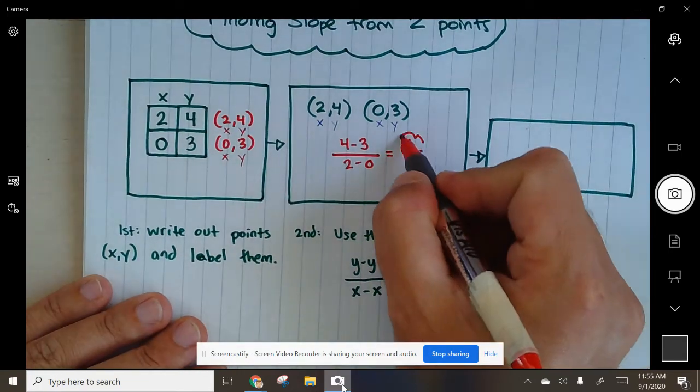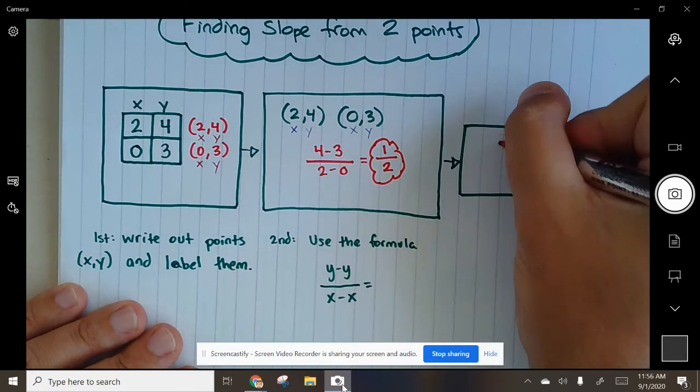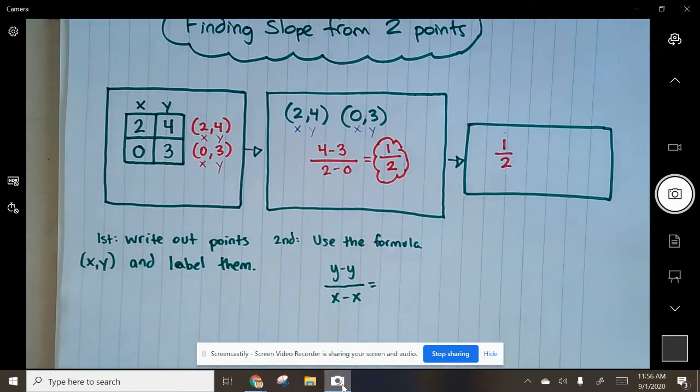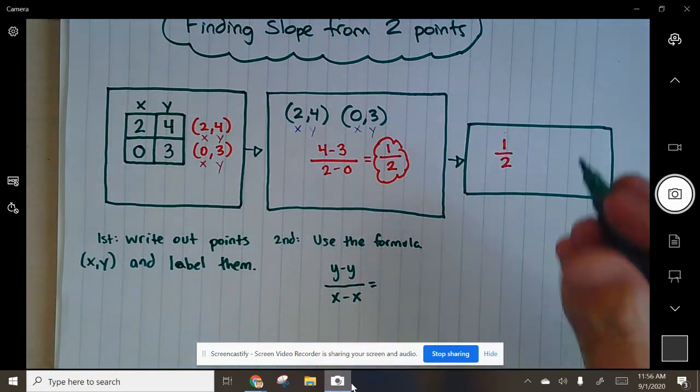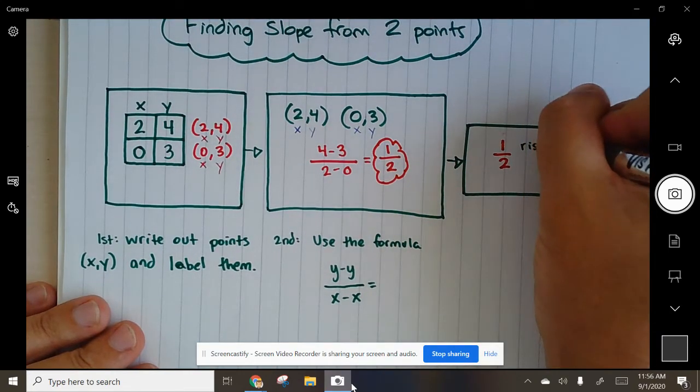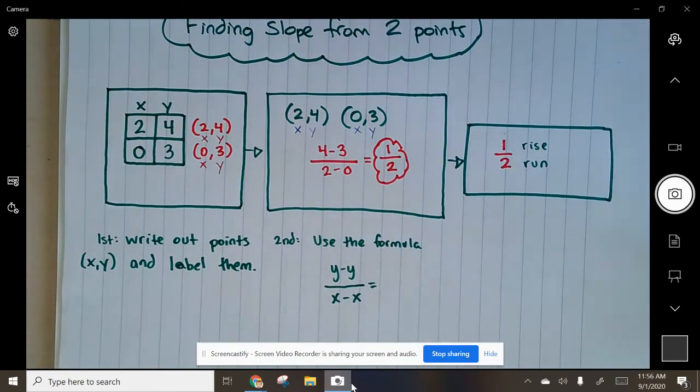And guess what? If you don't have to reduce it, that will be your slope. It will be 1 over 2: 1 rise, 2 run.